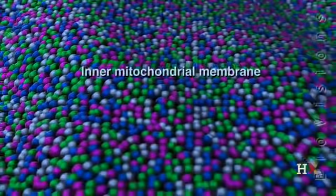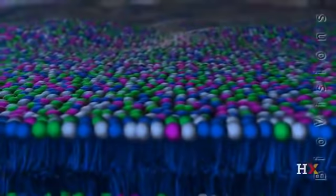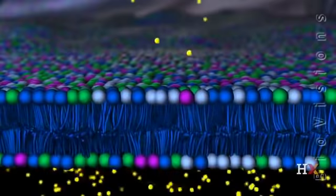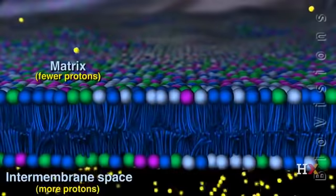Nearly all of this energy comes from reactions that take place at the inner mitochondrial membrane. One of the key roles of this membrane is to act as a barrier to positively charged particles called protons, thus allowing a concentration gradient to be maintained where the inter-membrane space has far more protons than the matrix.